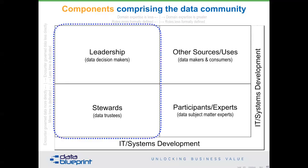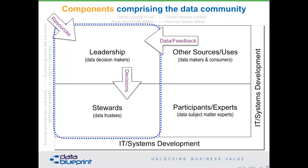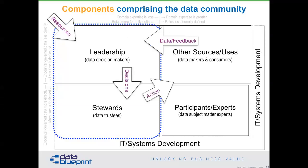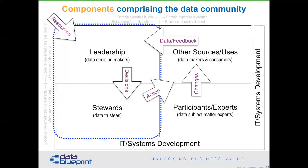Let's talk about what some can define as a leadership group. Some groups have said leaders and stewards will be part of the enterprise data group; others include stewards and participants. The role of this group, whatever you define it as, is to provide resources, because we need some sort of programmatic sustainment — this cannot be done project by project. Data makers and consumers provide data and feedback. Leaders make decisions, and stewards figure out what action needs to be taken by everybody else — what changes need to be made such that we can better use our data in support of strategy.